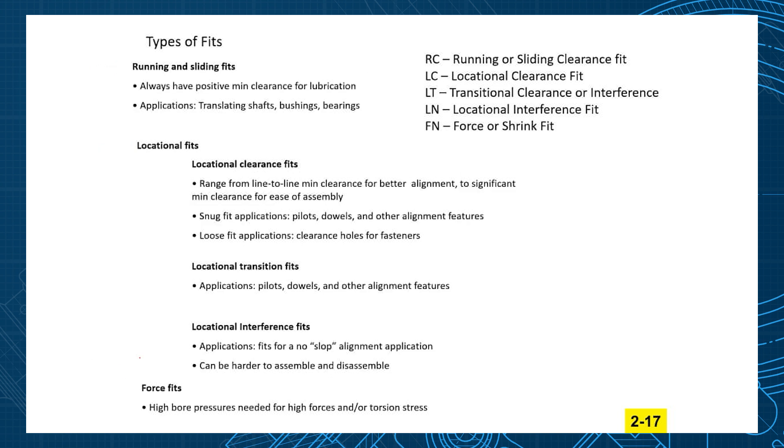Running and sliding fits are going to be for translating shafts, bushings, bearings, basically anything that moves. Locational fits are usually stationary objects that you locate in one place. There can be clearance there and there can be interference depending on whether you choose the locational clearance fits or the locational interference fits. The force fits are usually high bore pressures, so you're going to have to have heavy machinery that puts them together.